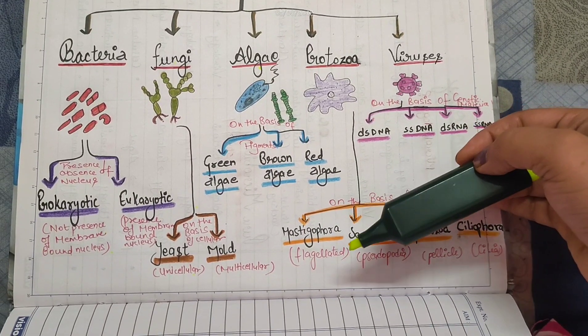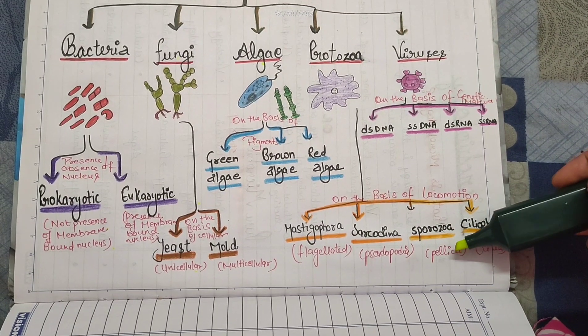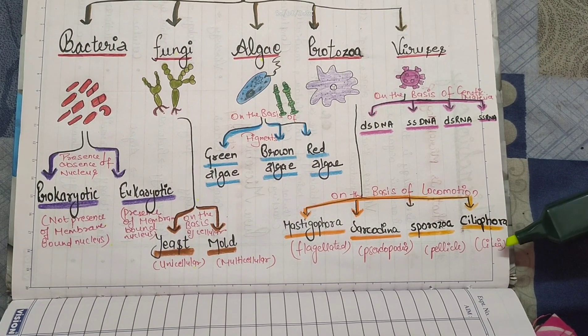In mastigophora, there is presence of flagella. Sarcodina has pseudopodia, and sporozoa has a pellicle. Ciliophora has cilia.